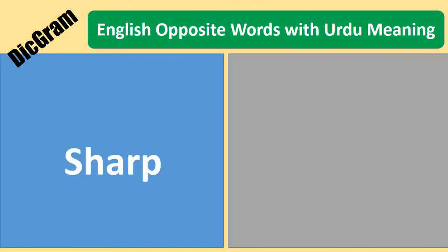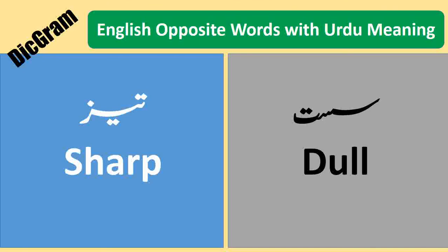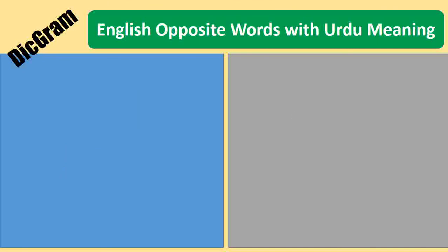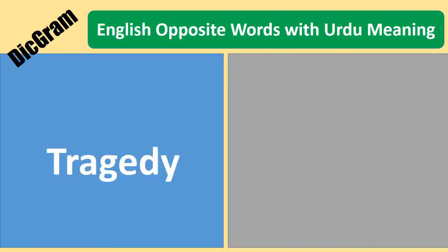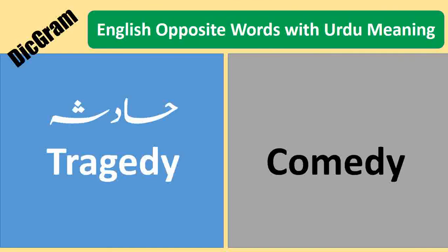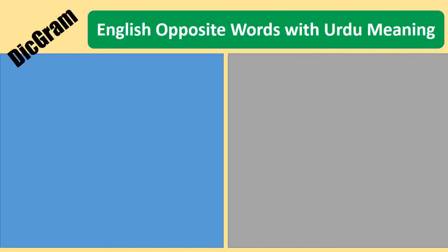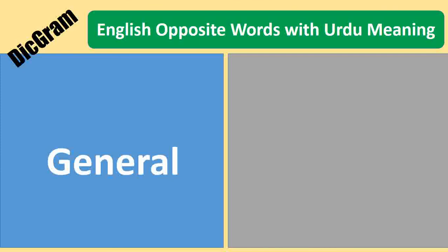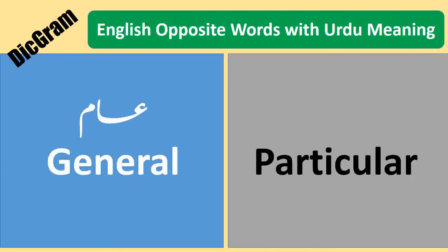Sharp — Teze. Dull — Sust. Tragedy — Aadsah. Comedy — Masaya. General — Arm. Particular — Haas.